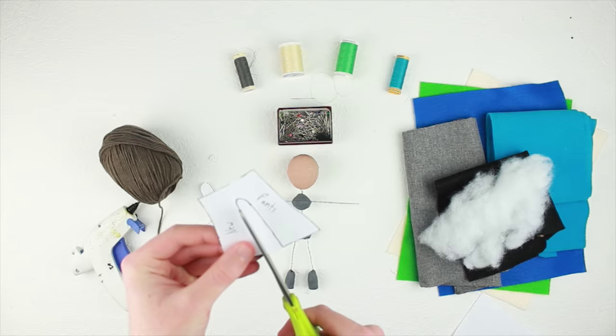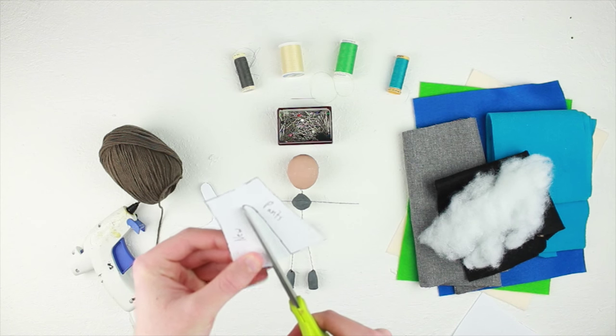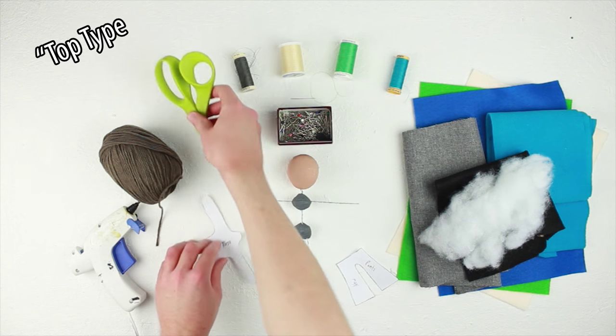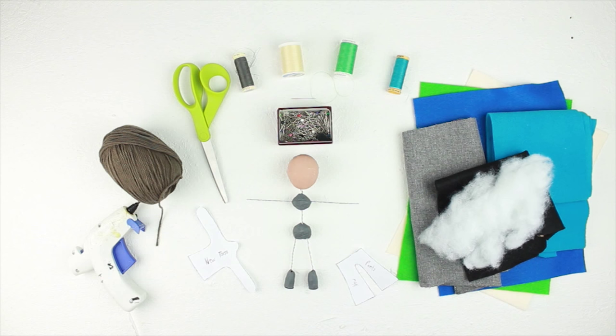We'll be using the skin tone felt for the torso since we'll need to have the little nubby hands and neck poking out from under the shirt or other top type of attire, but the legs can just be the color of the pants, since we won't be seeing anything under them. Unless you want to for some reason.